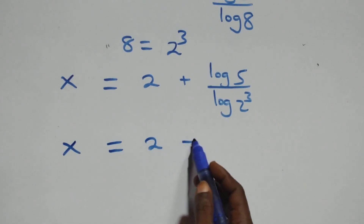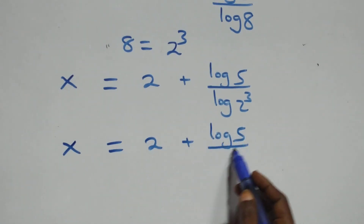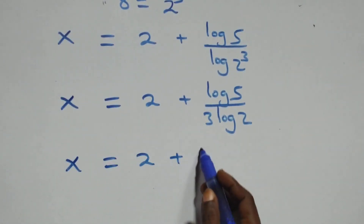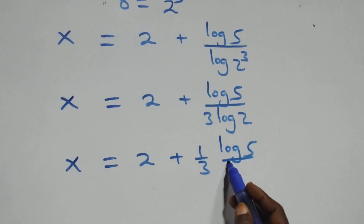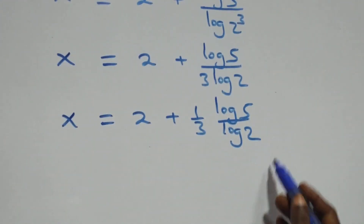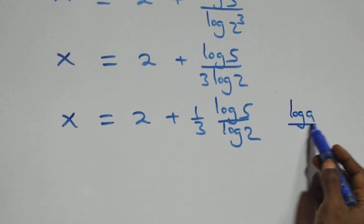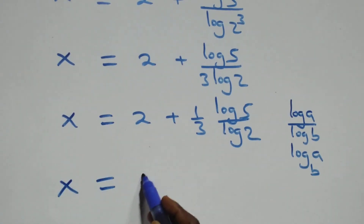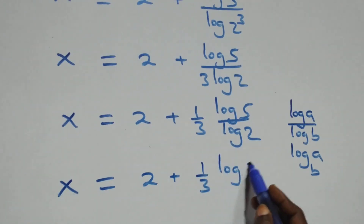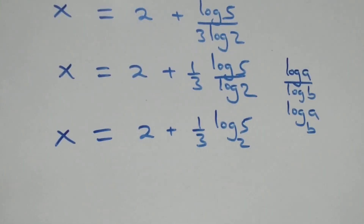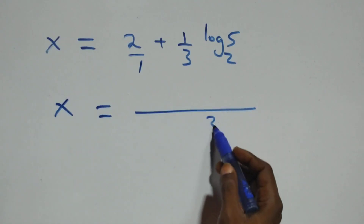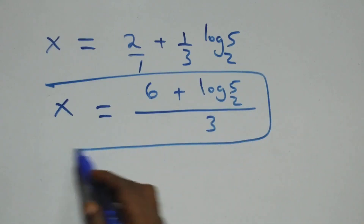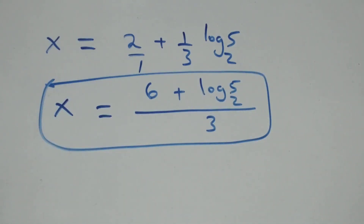This can also be written as x equals 2 plus one-third times log 5 over log 2. Applying the change of base formula — log a over log b equals log a to base b — we have x equals 2 plus one-third times log 5 to base 2. Bringing this together as one fraction with denominator 3, this becomes x equals 6 plus log 5 base 2, all over 3. That is the value of x.